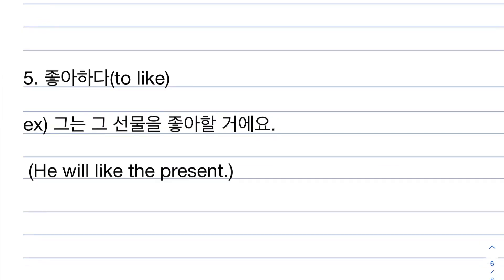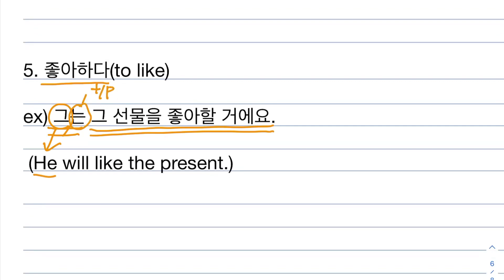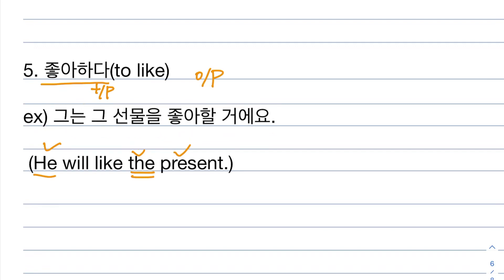Number five. 좋아하다 means to like. Example: 그는 그 선물을 좋아할 거예요. 그는 — 그 is 'he' with topic particle. 그 선물 — here 그 means 'the', so there are two 그 with totally different meanings. 선물 is present, 을 is object particle, 좋아할 거예요 means will like. So 그는 그 선물을 좋아할 거예요 means 'he will like the present.'